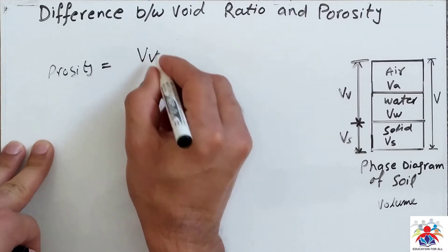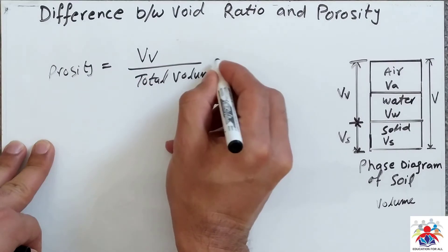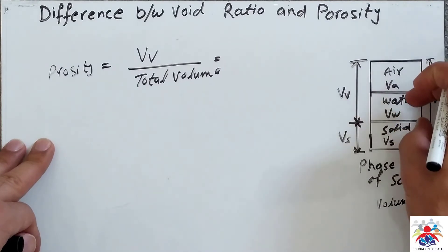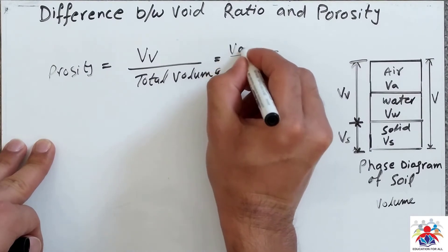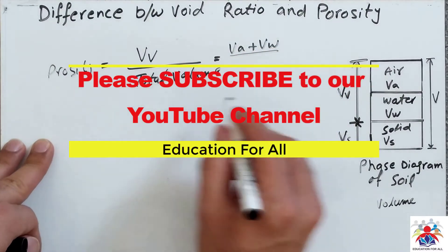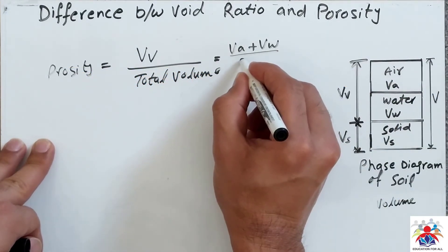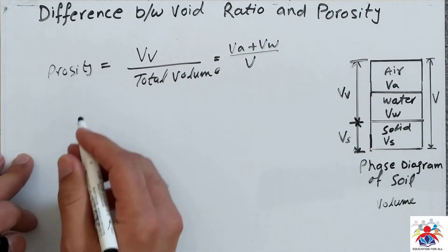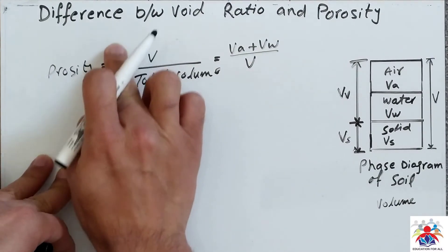So the porosity is equal to volume of voids divided by total volume. So the volume of voids are basically volume of air plus volume of water. So you can also write this VA plus VW divided by total volume, which is the volume of all of them, so air, water, and solid. So it'll be V total. Whereas you can also express porosity in this symbol, so this symbol is kind of similar to efficiency, same symbol.